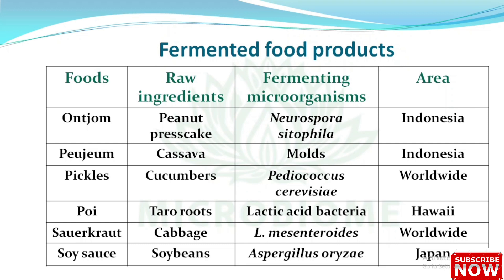Poi — raw ingredient: taro roots, fermenting microorganism: lactic acid bacteria, area: Hawaii. Sauerkraut — raw ingredient: cabbage, fermenting microorganism: Leuconostoc mesenteroides, area: worldwide. Soy sauce — raw ingredient: soybean, fermenting microorganism: Aspergillus oryzae, area: Japan.